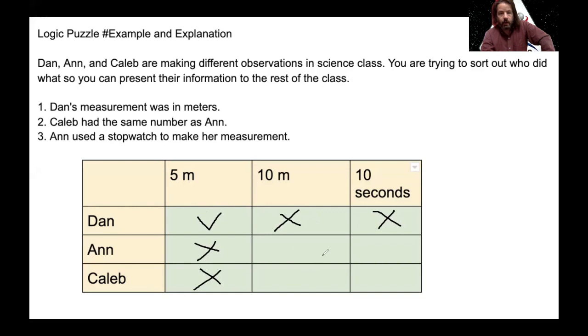And now it's just a matter of reading the last one - Ann had used a stopwatch. And then that leaves Caleb at 10 meters. So there's multiple ways to do it. But the number one thing that you have to realize is you can only put one check per row per column.